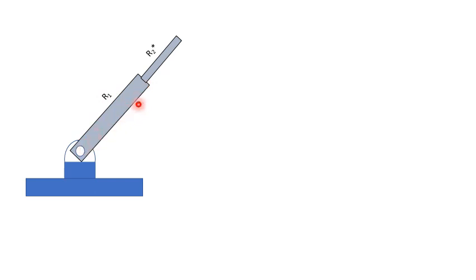This r2 length can be varied, that's why I have put an asterisk here. R1 is fixed, which is this length, but r2 can move inside and move out as well. So this is a variable. This is theta 1, the revolute joint.